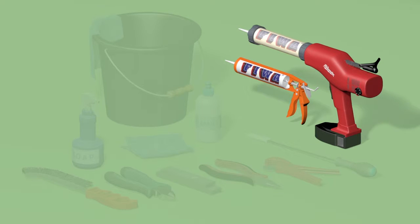FIWA sealant can be applied with a simple sealant gun, but when lots of penetrations are to be made, a professional cordless system is advisable.